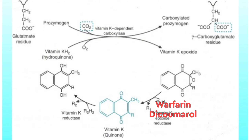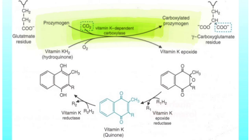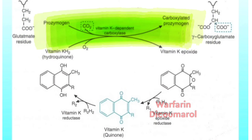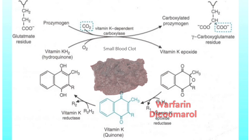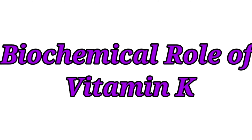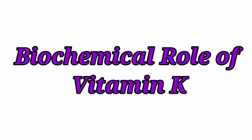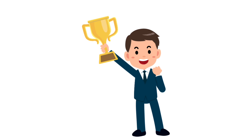There is one important clinical application of knowing this cycle: the drugs warfarin and dicoumarol competitively inhibit the gamma carboxylation system due to their structural similarity with vitamin K, which essentially helps in the prevention of clotting. This is the whole picture of the biochemical function of vitamin K.